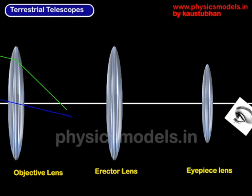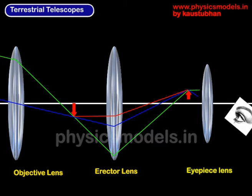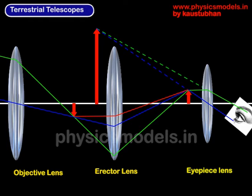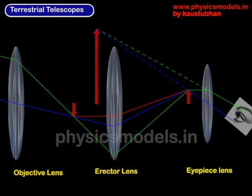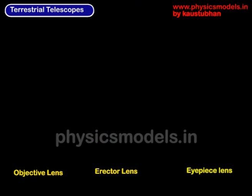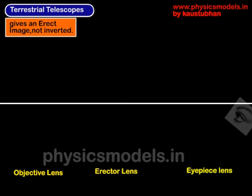The rays come in through the objective lens, form two intermediate images, and finally the eyepiece projects that to form a large, vertical, and magnified image. Let's look at it once again. We have the principal axis — the white line.